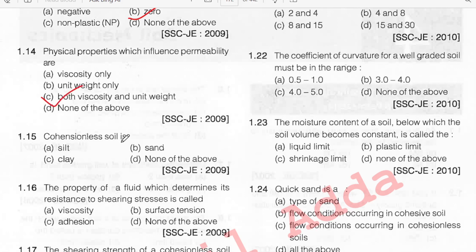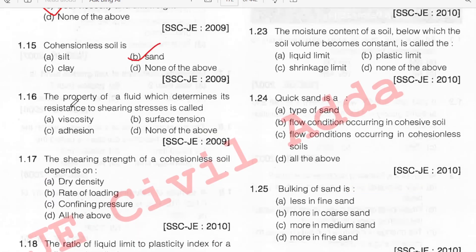Cohesionless soil is — cohesionless soil is sand, option B. The property of a fluid which determines its resistance to shearing stress is called viscosity. Option A.